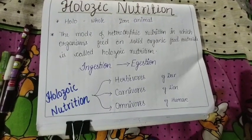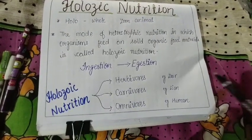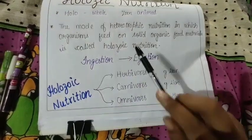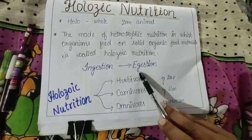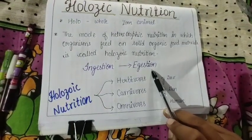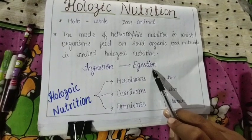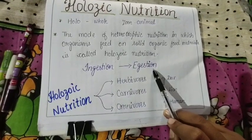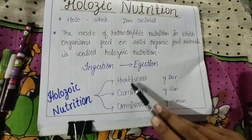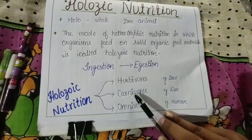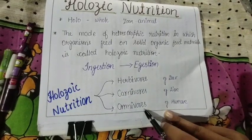In holozoic nutrition there are two processes: ingestion, which is food intake, and egestion, which is excretion of waste. Holozoic nutrition is divided into three categories: herbivores, carnivores, and omnivores.